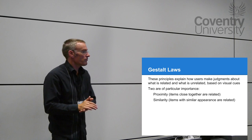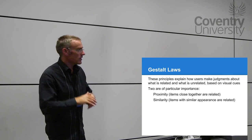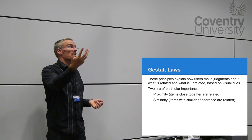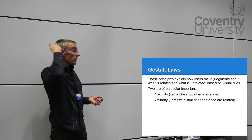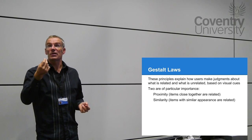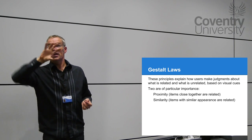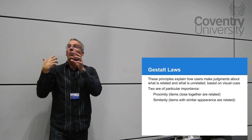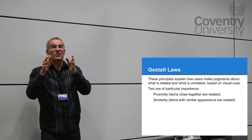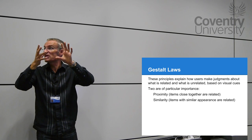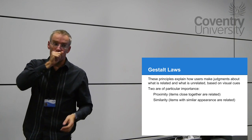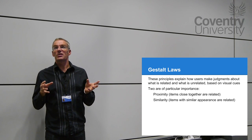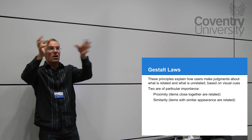Gestalt laws — first, be able to say it: Gestalt. Gestalt is how the human brain perceives things. When you look at something, your eyes absorb photons hitting the back of the retina, turned into electrical signals. The eye sees things upside down and the brain rotates what it sees 180 degrees and rebuilds the image. Those trick images where you see different things in the same image — that's an example of Gestalt.